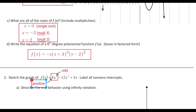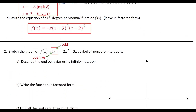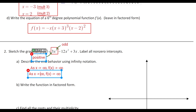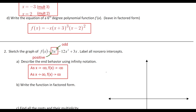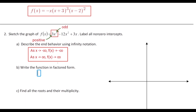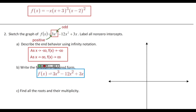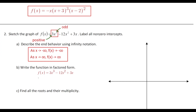Using infinity notation: as x approaches negative infinity, f(x) approaches negative infinity; as x approaches positive infinity, f(x) approaches positive infinity. We only need to look at the first term to determine that. Next, to write the function in factored form, we start with 3x³ − 12x² + 3x and factor out the GCF of 3x, giving 3x(x² − 4x + 1).